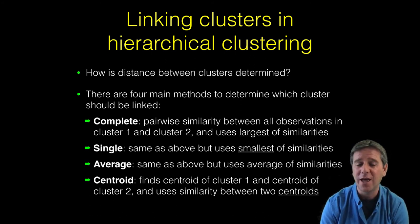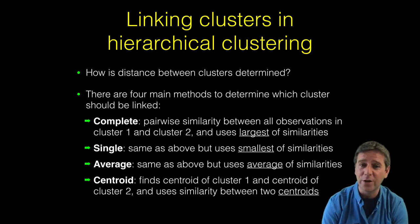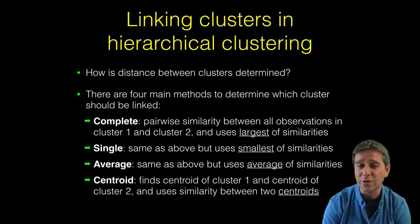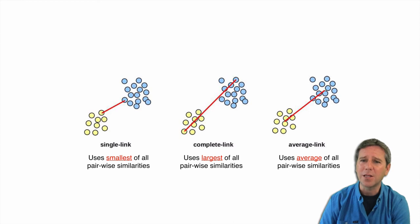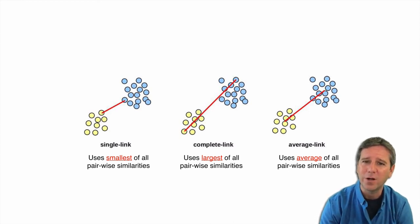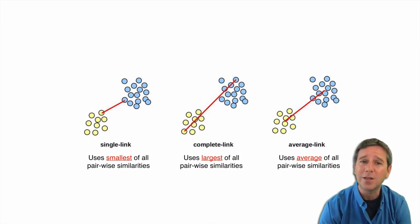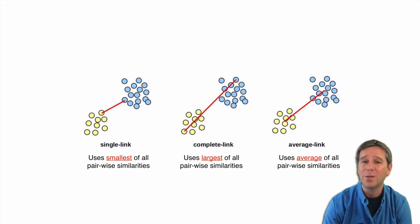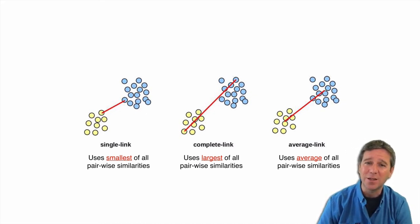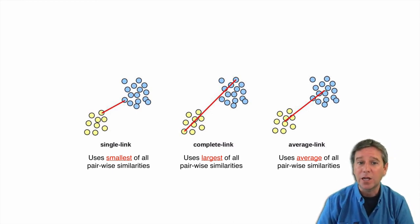Visually, it's easier to understand this. Single takes the smallest distance between points in two different clusters when linking them. Complete takes the largest. Average takes the mean of all those distances. Centroid takes the centroid point or center point of each cluster and the distance between those.